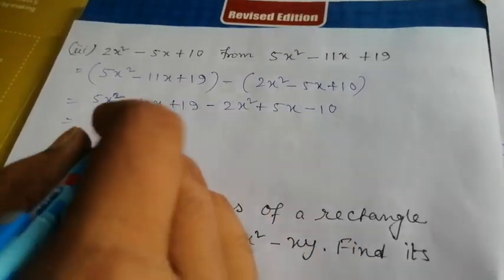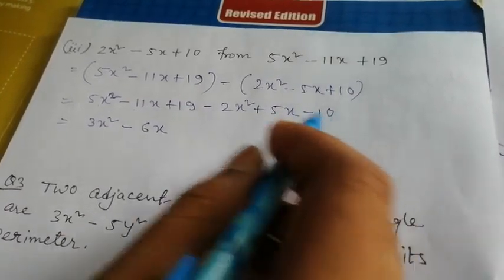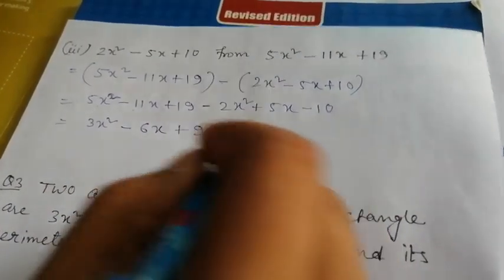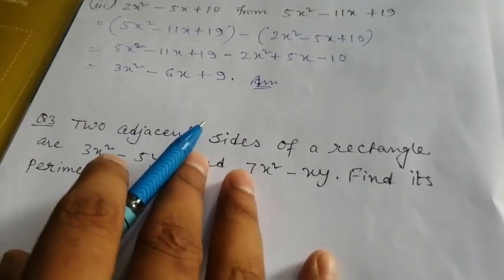Minus 11x plus 5x equals minus 6x. Then plus 19 minus 10 equals 9. So that is your answer. I hope all of you understand - always remember like terms are added, unlike terms are not added or subtracted.